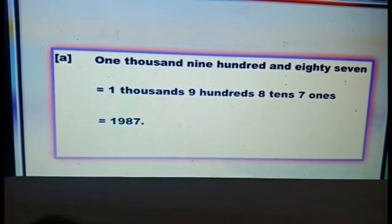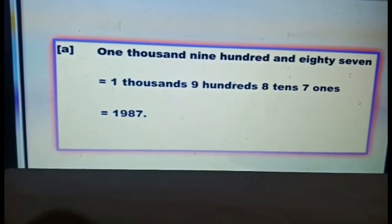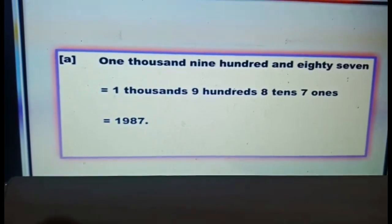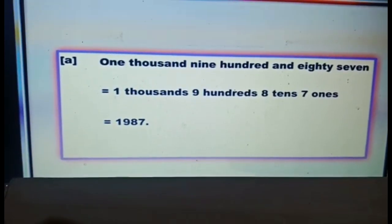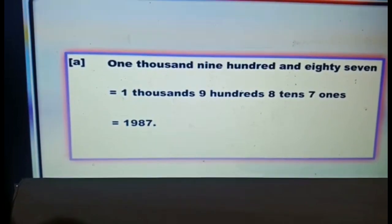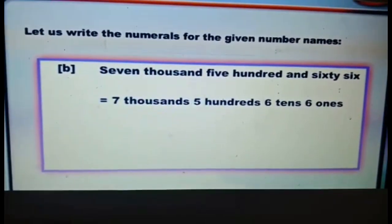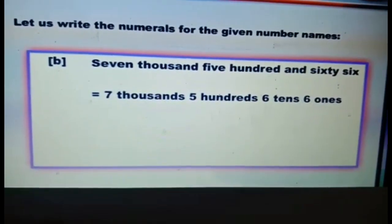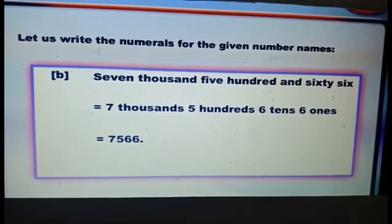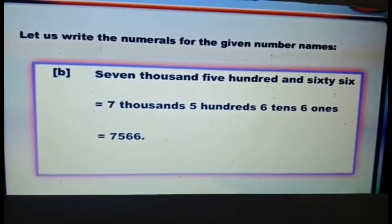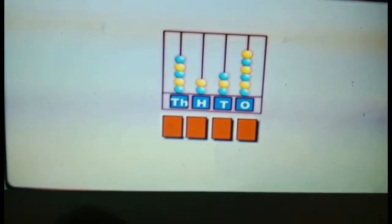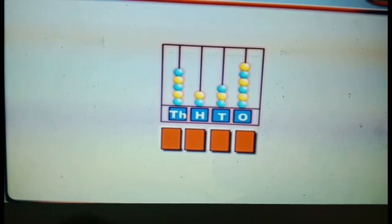We write it as eight thousand nine hundred and eighty-seven. Now let us write the numerals for the given number names. One thousand nine hundred and eighty-seven: we have one thousand, nine hundreds, eight tens, and seven ones — we write it as 1987. Next, seven thousand five hundred and sixty-six: we have seven thousands, five hundreds, six tens, and six ones — we write it as 7566.